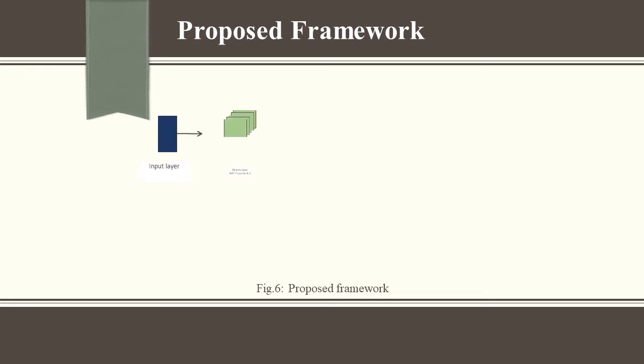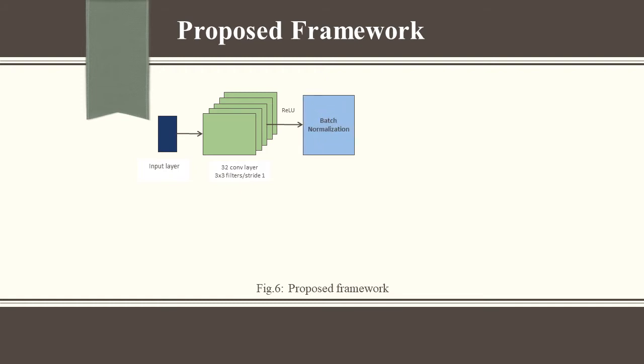Proposed Framework: In our proposed model, 32 filters are used in the first convolutional layer with filter sizes of 3x3 and each has 3 channels. Same padding is used so that the input pictures are zero-padded such that the filters convolve over each pixel of the input picture. In the convolutional layer, we used the ReLU activation function. To improve model performance and stability, batch normalization is used. The max pooling size is 2x2 and moves by a stride of 2.